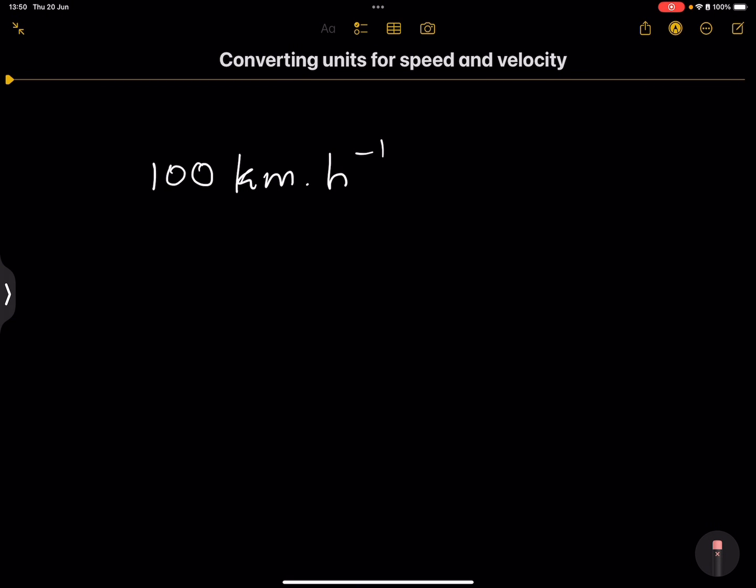So I'm going to convert 100 kilometers per hour to meters per second. So the first thing that we do, note that a kilometer is a thousand meters. So if I have a hundred kilometers, so one kilometer, if I say one kilometer, that's an equivalent of 1000 meters.